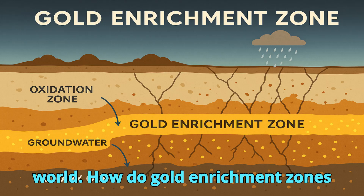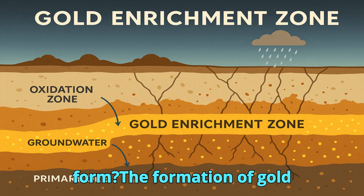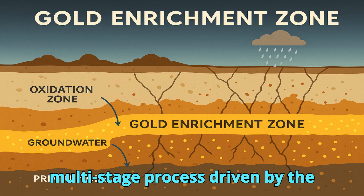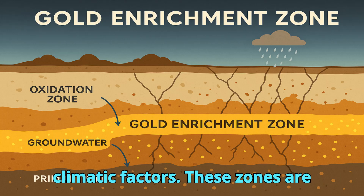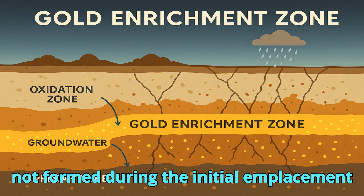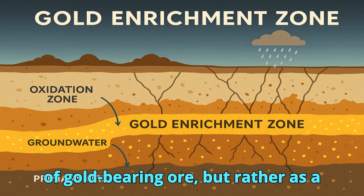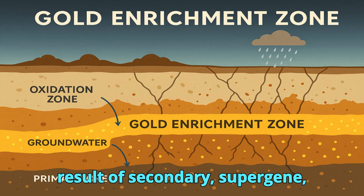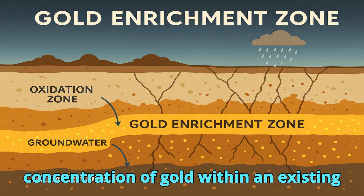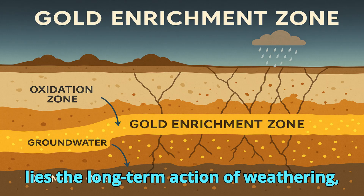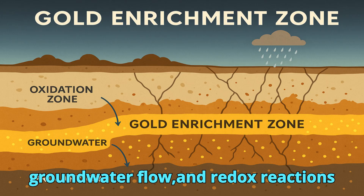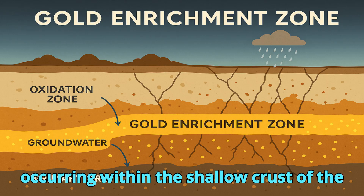The formation of gold enrichment zones is a complex, multi-stage process driven by the interaction of geological, chemical, and climatic factors. These zones are not formed during the initial emplacement of gold-bearing ore, but rather as a result of secondary supergene processes that alter the composition and concentration of gold within an existing deposit. At the heart of this phenomenon lies the long-term action of weathering, groundwater flow, and redox reactions occurring within the shallow crust of the earth.